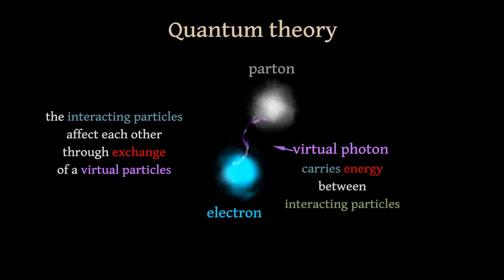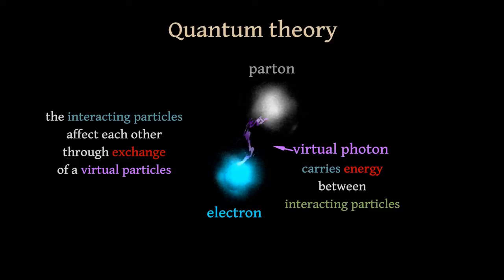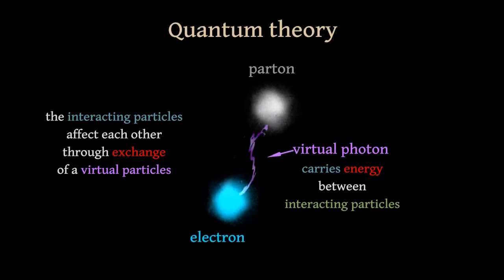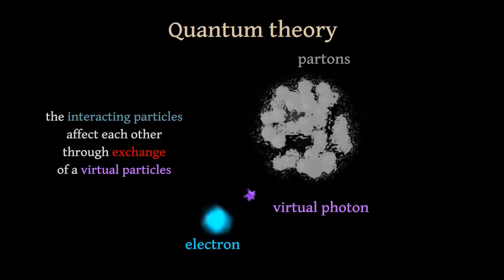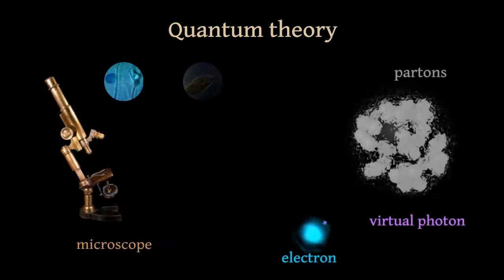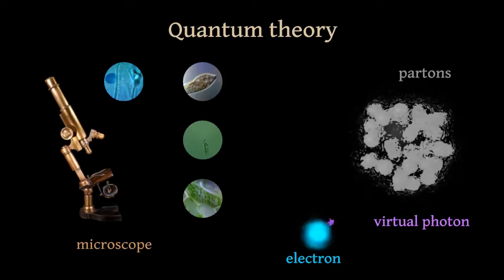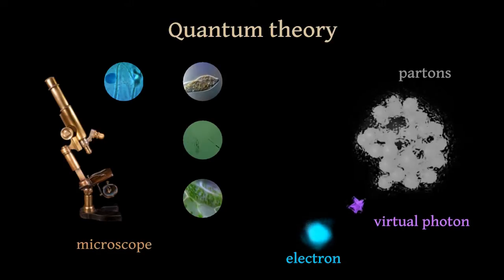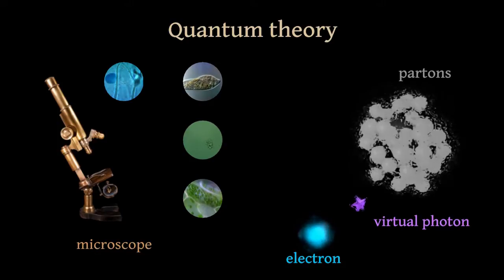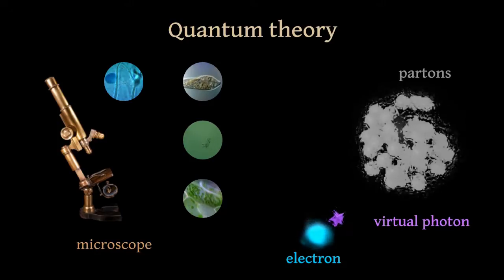The virtual photon carries energy, which is transferred from one colliding particle to another during their interaction. Usually, physicists consider the virtual photon separately from the parent electron. This allows us to make an analogy with a microscope. In both cases we use the photon to study the object of investigation. The more powerful photon, with a lesser wavelength, can resolve the smallest objects,